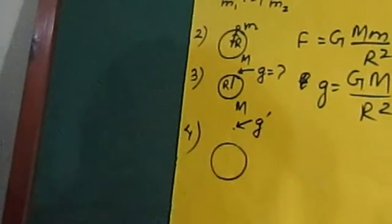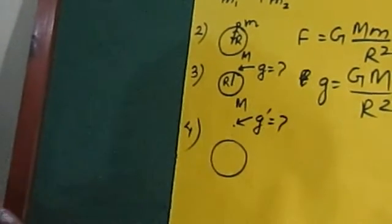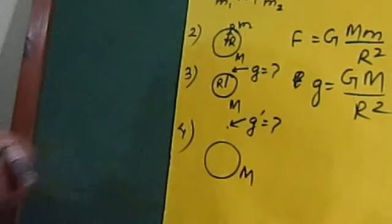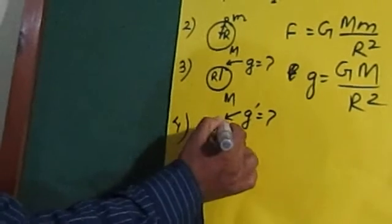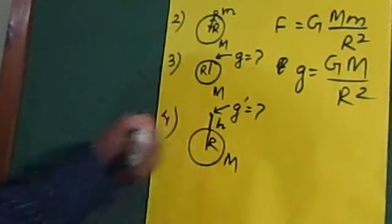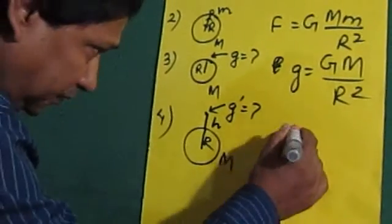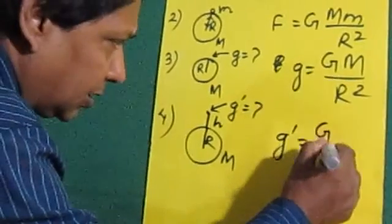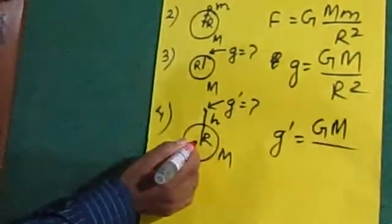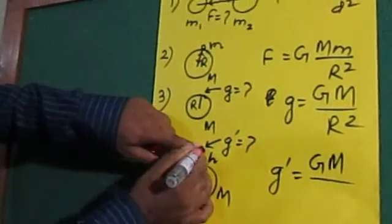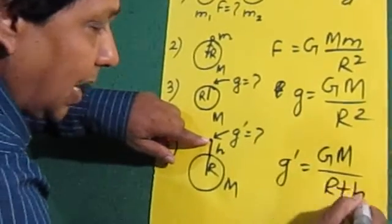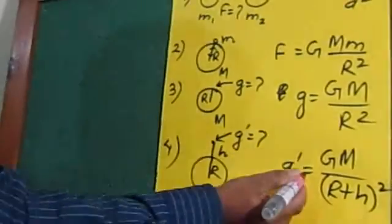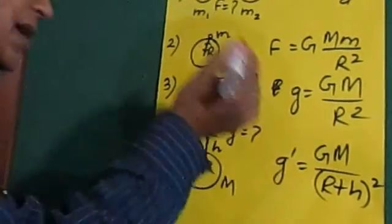It can be denoted by g dash. We want to find out, then the mass of the earth remains same M and the radius of the earth is R, and from the surface to this point the height is h. The acceleration due to gravity at this point can be calculated by using this equation: G*M/(R+h)². This equation is used to calculate the acceleration due to gravity at certain height.